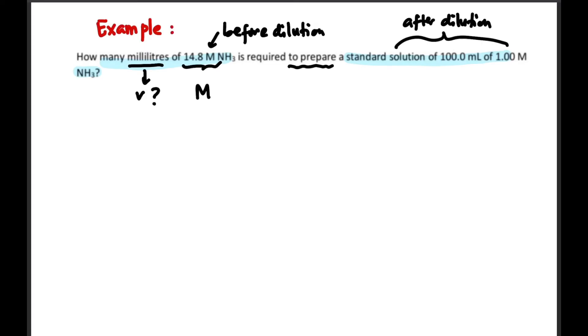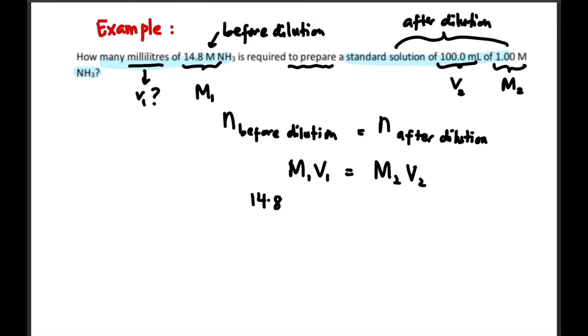And we are asked to prepare a standard solution. Maksudnya kalau kita disuruh prepare standard solution, that means dia kena dilute. So this is after dilution. Dia bagi volume dan juga dia bagi molarity yang dia mau capai. So kita tahu bahawa untuk dilution, N before dilution is equal to N after dilution. So kita ringkaskan M1 V1 equals to M2 V2.